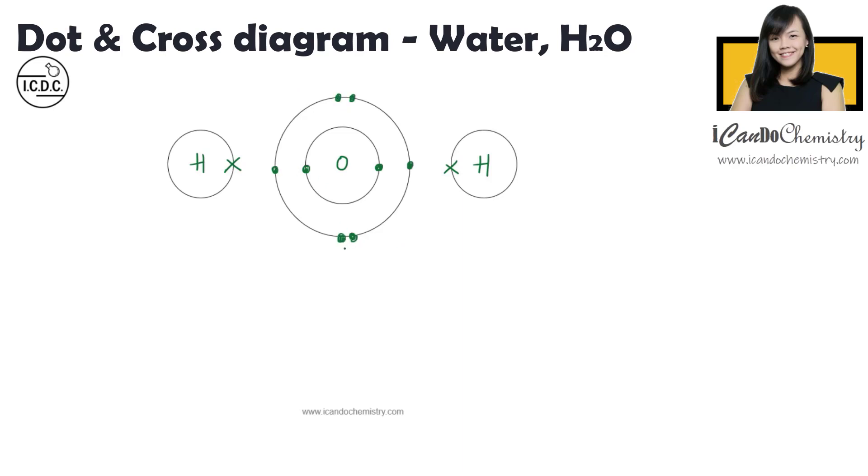So we know that hydrogen has only one shell and it needs one more electron to attain the noble gas electronic configuration. For oxygen, it has two shells, okay? So the second shell needs to have eight electrons to attain the noble gas electronic configuration.